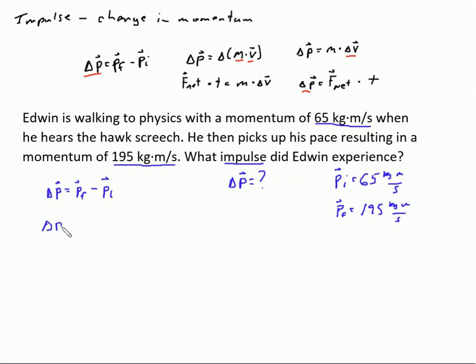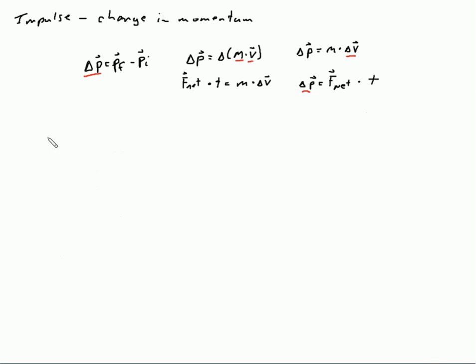So we'll just plug those in. That gives me 195 kilogram meters per second minus 65 kilograms meters per second. So I get a final impulse of 130 kilogram meters per second. The impulse or change in momentum that Edwin experienced was 130 kilogram meters per second.